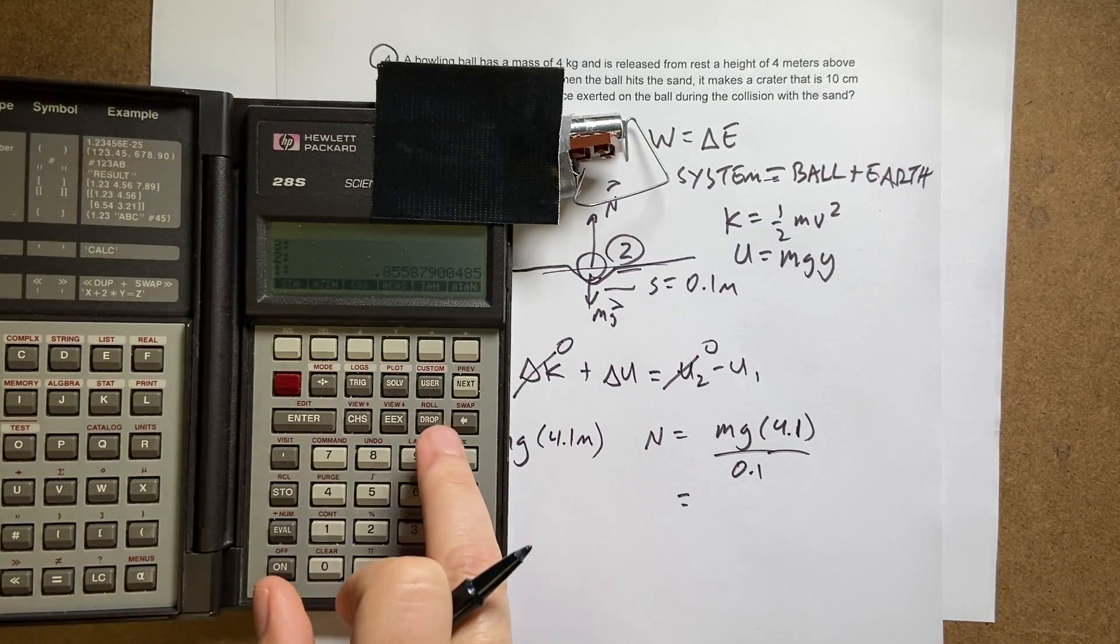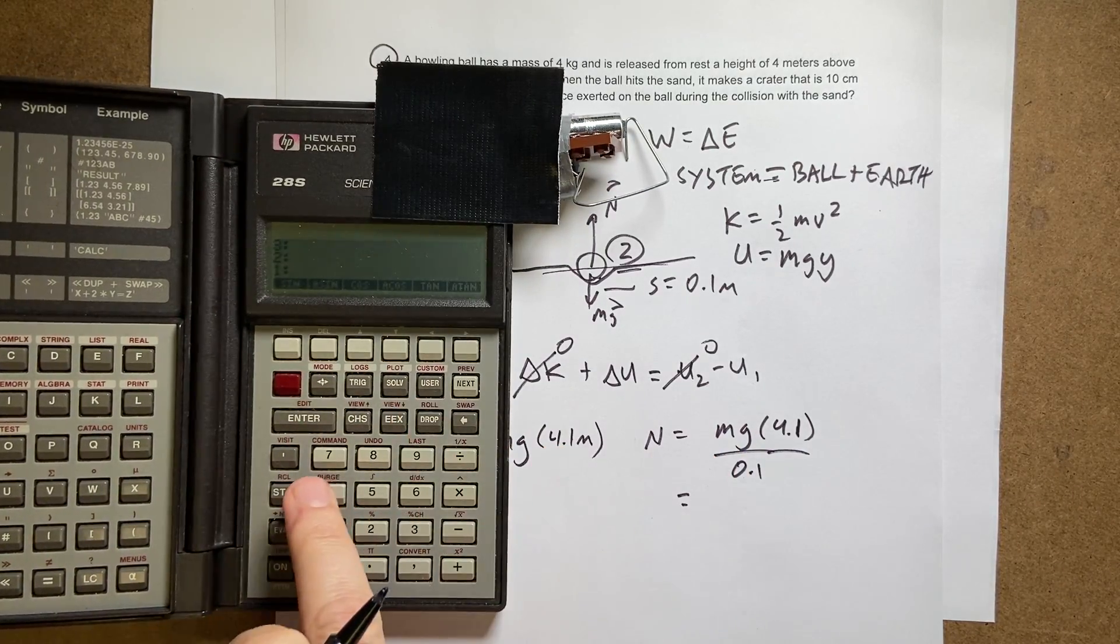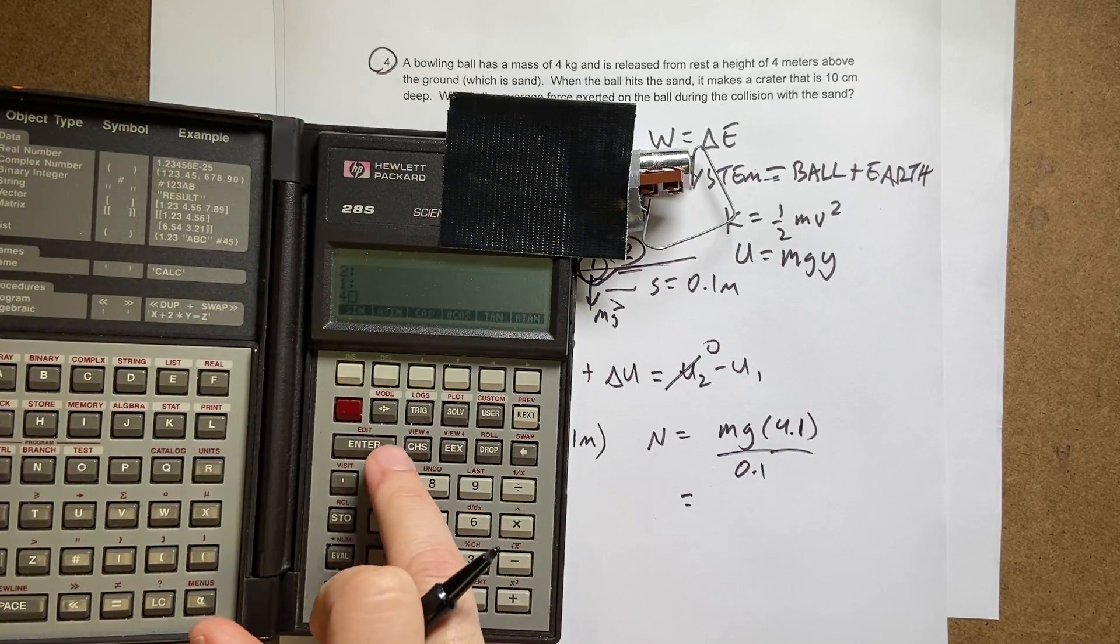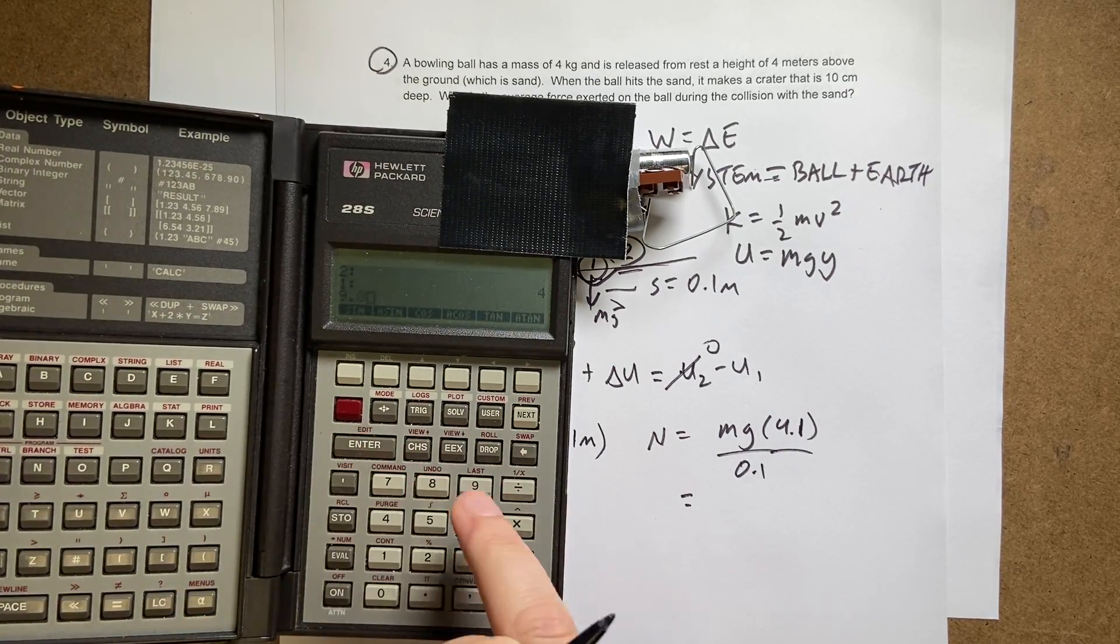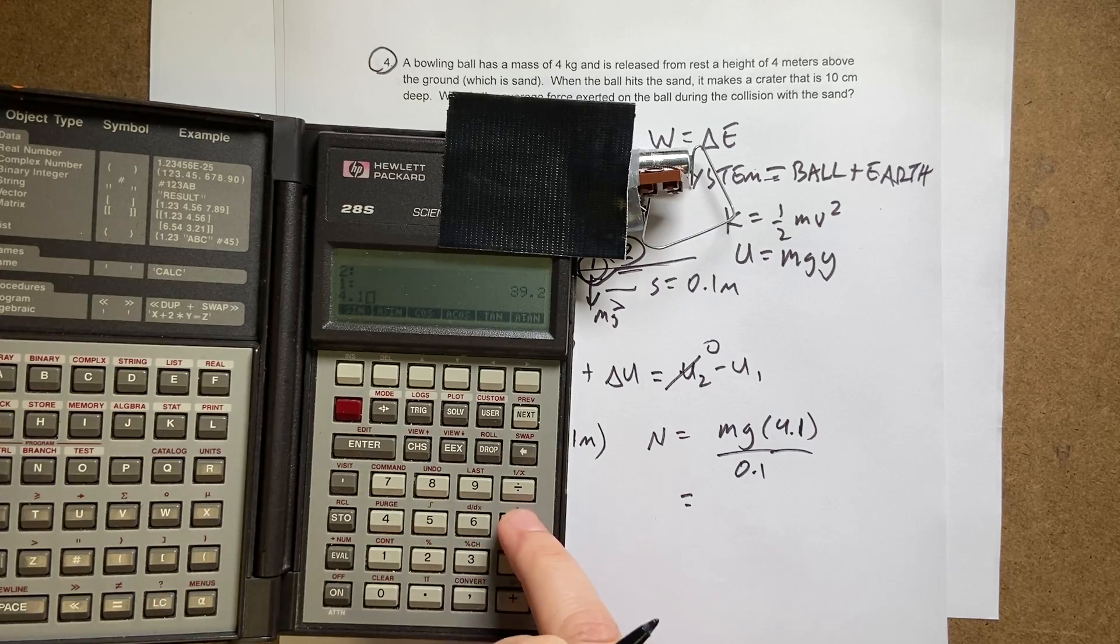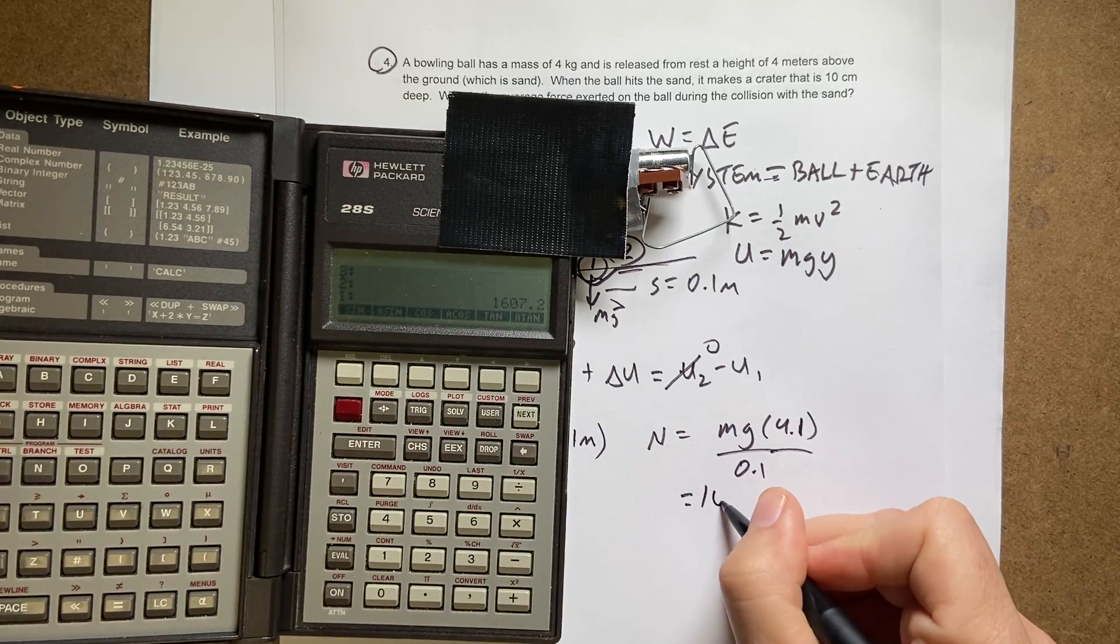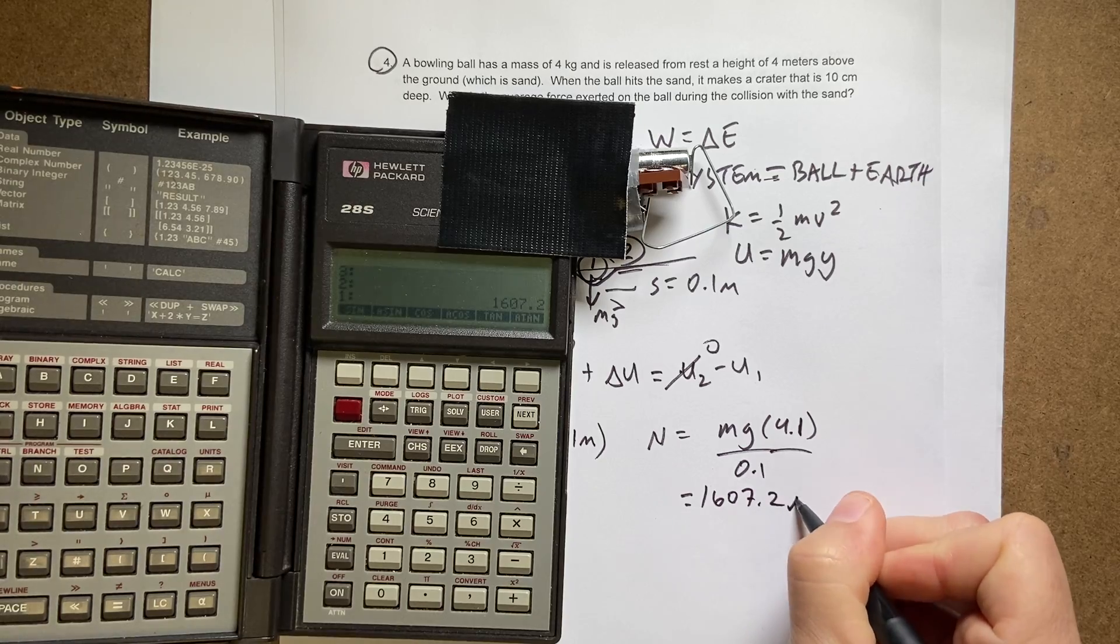I missed one step. That's fine. So the mass was 4 kilograms. 4 kilograms times 9.8 times 4.1 divided by 0.1.